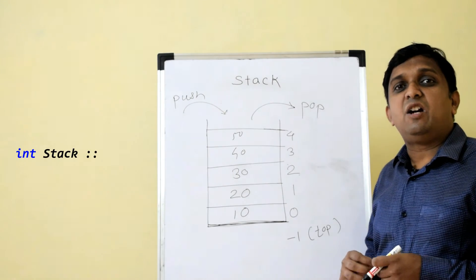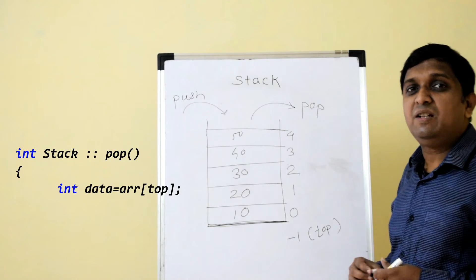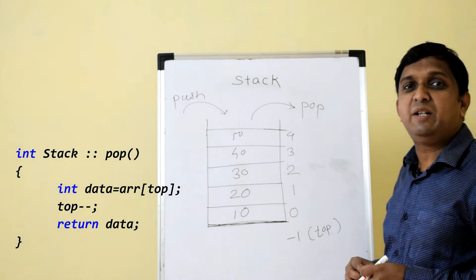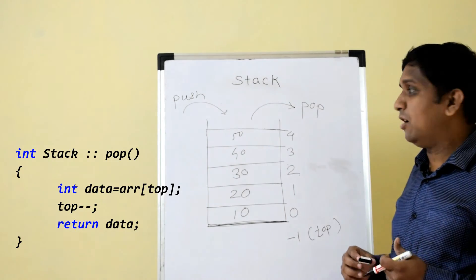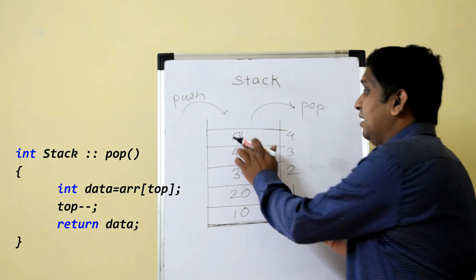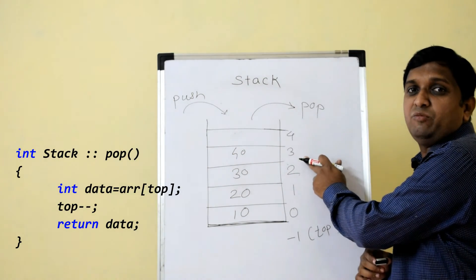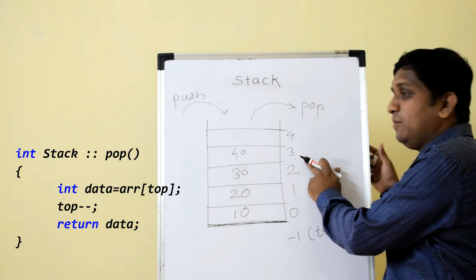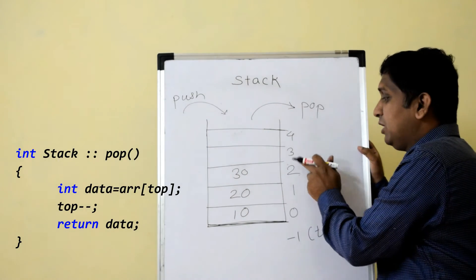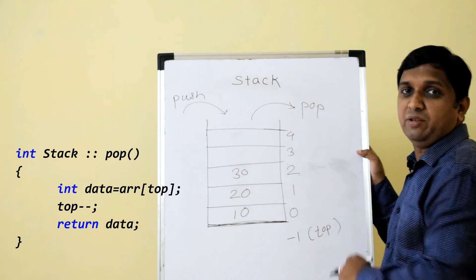For a pop operation, the algorithm is exactly opposite: first return the element, then decrement top. So if I pop, 50 is returned and top decrements from 4 to 3. Calling pop again returns 40 and top decrements from 3 to 2, and so on.